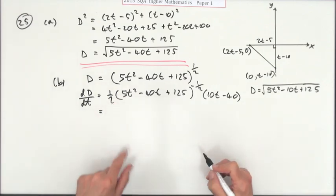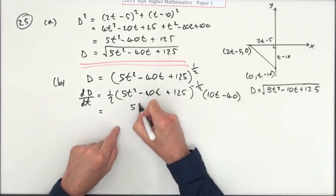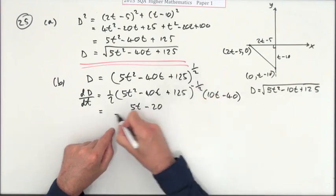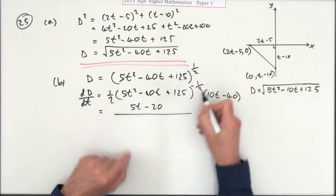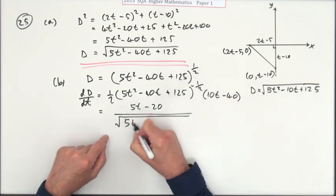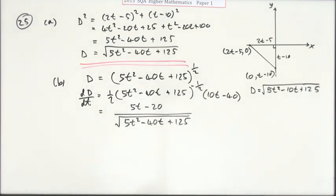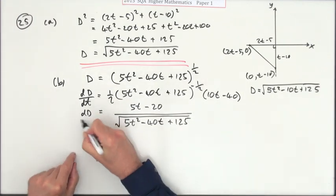Tidy that up. A half of that will half the numbers, making it 5t minus 20. That negative means this goes underneath, and that half means it's a square root underneath: the square root of 5t squared minus 40t plus 125. So there's the derivative.